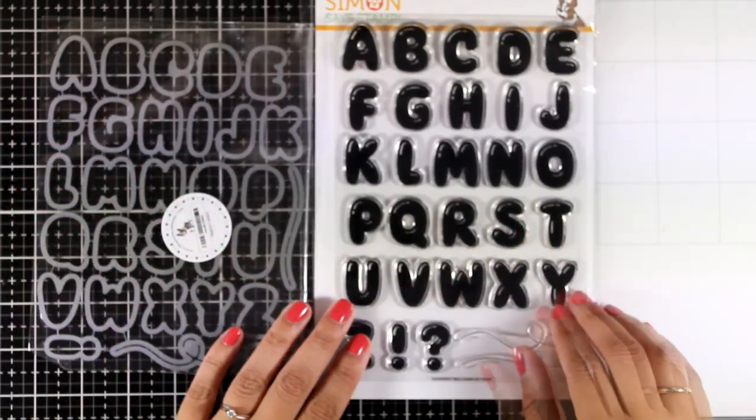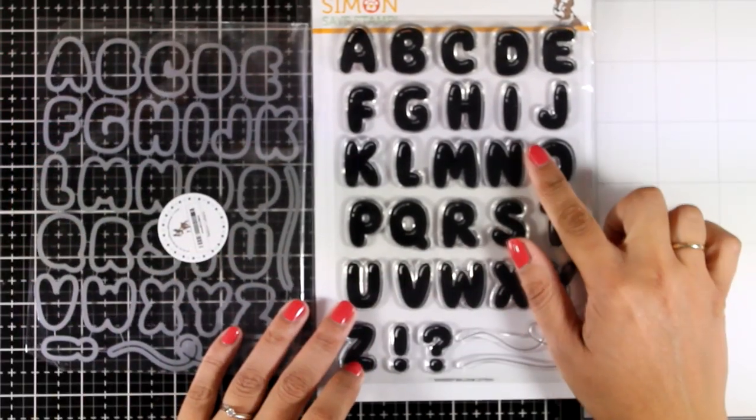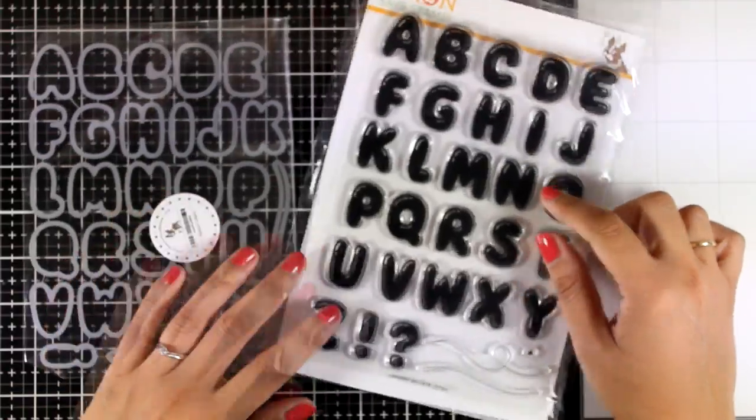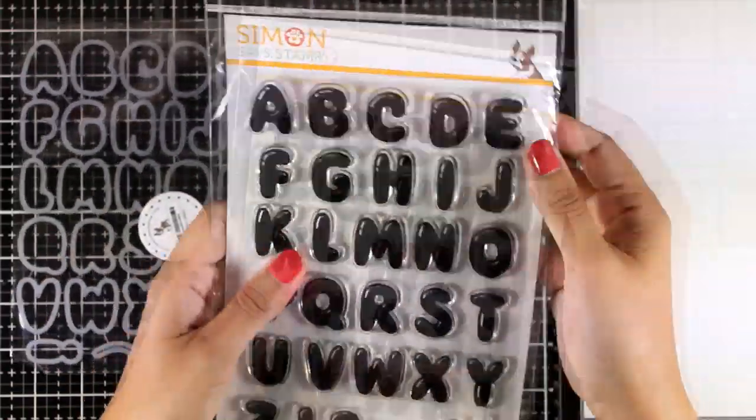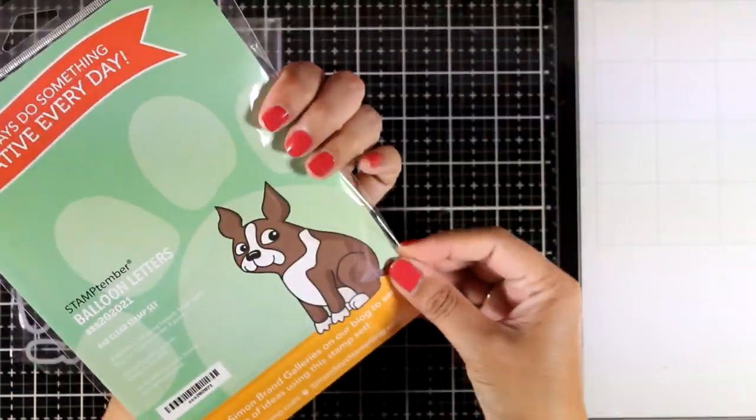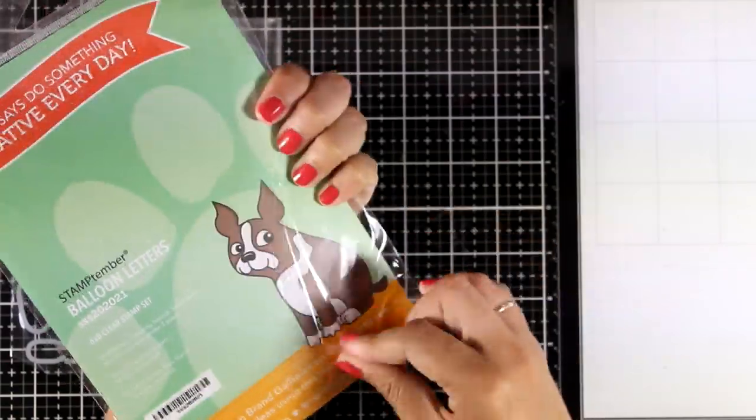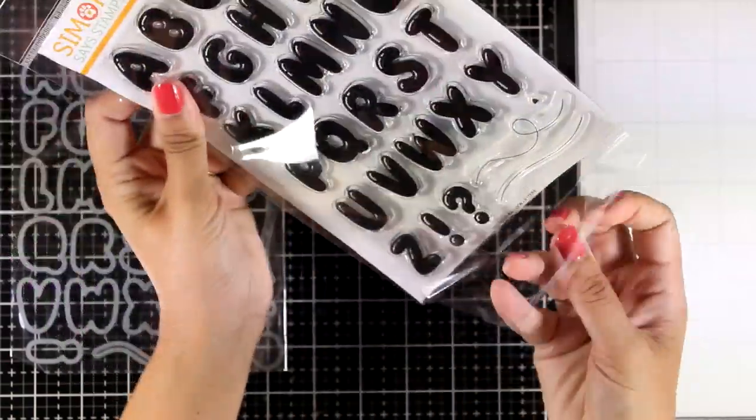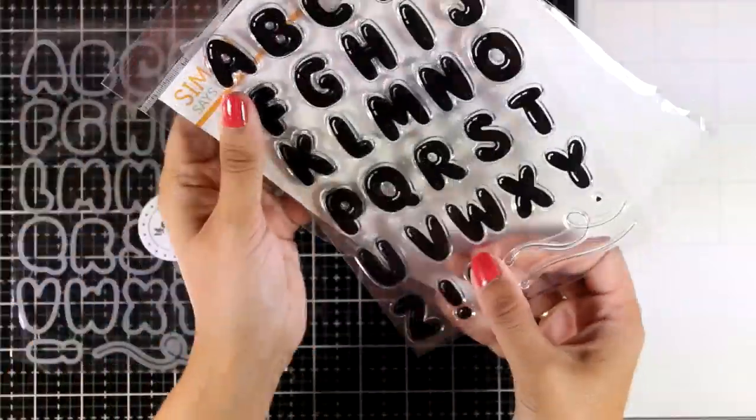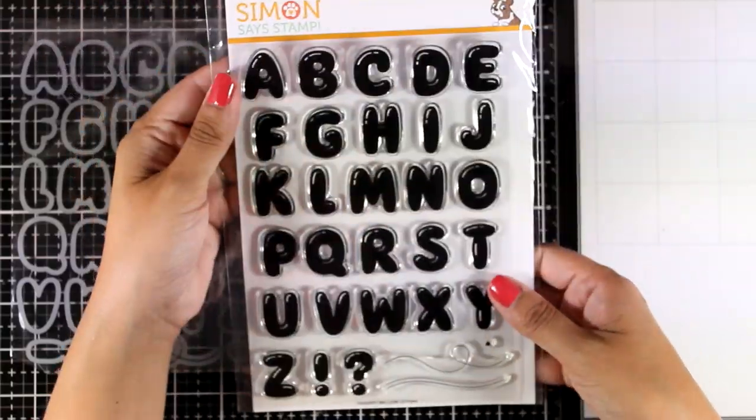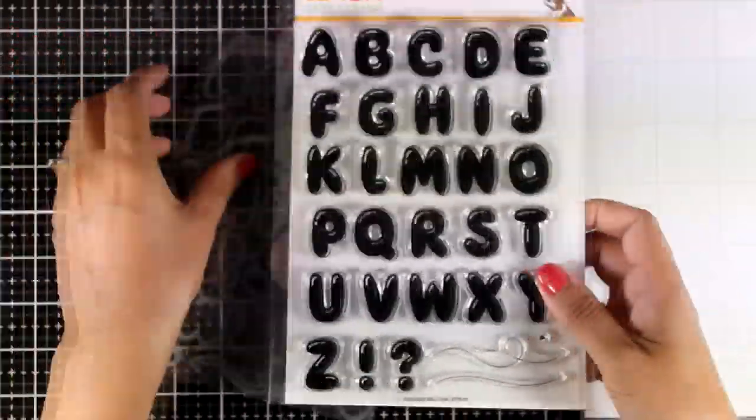For today I decided to go with the balloon alphabet just because I find it very versatile. You can easily customize your projects by stamping the name of the recipient or stamping your own sentiment like I am going to do today. I think it's one of those stamp sets that never gets old and you will be grabbing for it again and again.